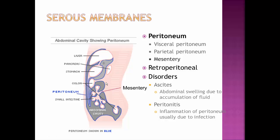The mesentery also helps hold organs in place — with a lot of undulating tube in the small intestine, it needs to be held in place. The mesentery also stores fat. Not every organ in the abdominal cavity is covered with serous membranes. Some are retroperitoneal — meaning behind the peritoneum. For example, the pancreas is behind the peritoneum and is not covered with visceral peritoneum. Other retroperitoneal organs include the duodenum, parts of the large intestine, and the kidneys, although the kidneys are not part of the digestive system.